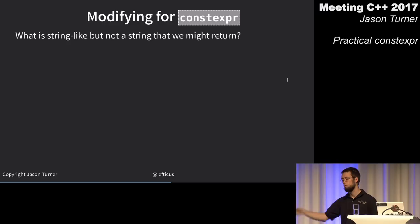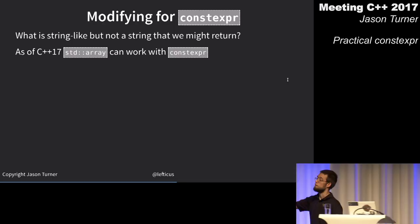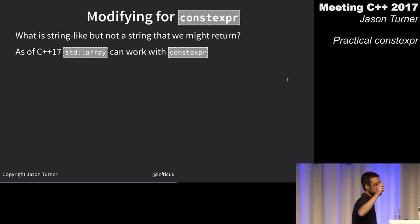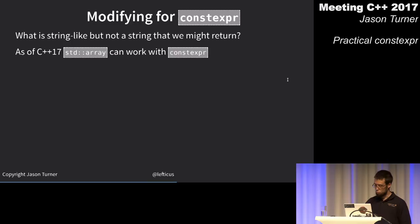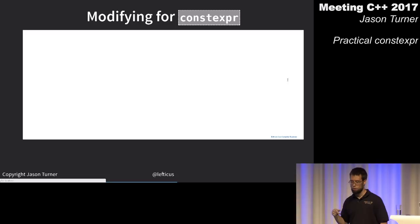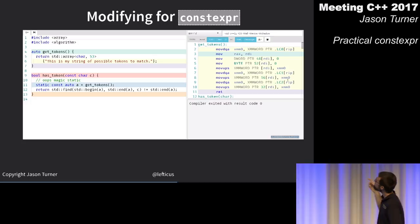In C++17, std::array is fully constexpr enabled. So we can swap out std::string with std::array — that makes sense for this code. Now get_tokens returns a std::array.